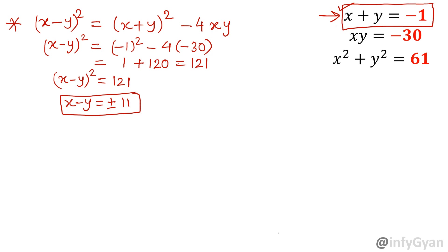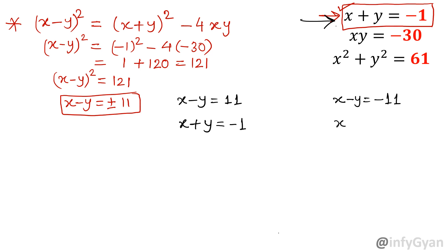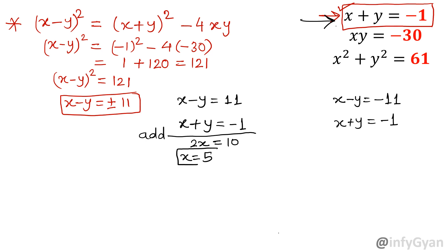Now let us consider x minus y equals positive 11, together with equation 3: x plus y equals negative 1. Adding both equations, 2x equals 10, so x equals 5. Once x is 5, substituting gives 5 minus y equals 11, so y equals negative 6.